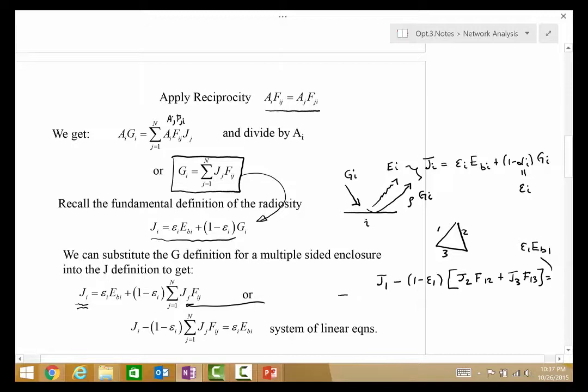For the second surface, we'd have J2 minus 1 minus Epsilon 2, J1, F21 plus J3, F23 is equal to Epsilon 2, Eb2. And, the same thing happens for J3, at surface 3, J3, 1 minus Epsilon 3, J1, F31 plus J2, F32 is equal to Epsilon 3, Eb3.